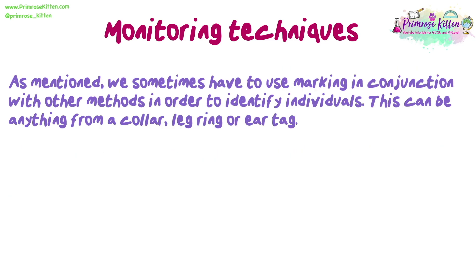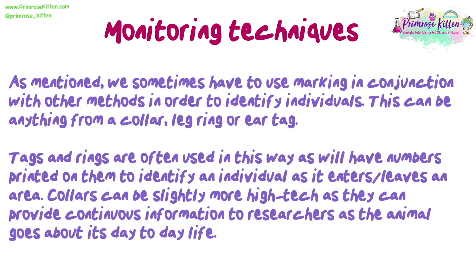We sometimes have to use marking in conjunction with other methods in order to identify individuals. This can be anything from a collar, a leg ring, or an ear tag. Tags and rings often have numbers printed on them to identify the individual as it enters or leaves an area. Collars can be slightly more high-tech, as they can provide continuous information to researchers as the animal goes about its day-to-day life.